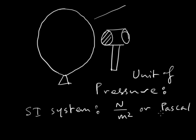This is the most popular unit of measuring pressure. In CGS system it is dyne per centimeter square.